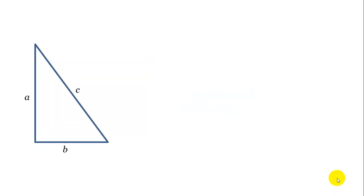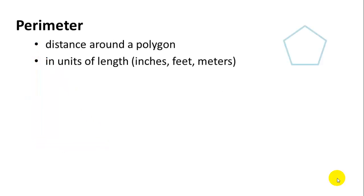Now let's look at a triangle. It's the same concept — we're just going to add the sum of the lengths of each side. So A, B, and C added together give us the perimeter of the triangle. Perimeter is defined as the distance around a polygon, and it's measured in units of length — inches, feet, centimeters, and so on.